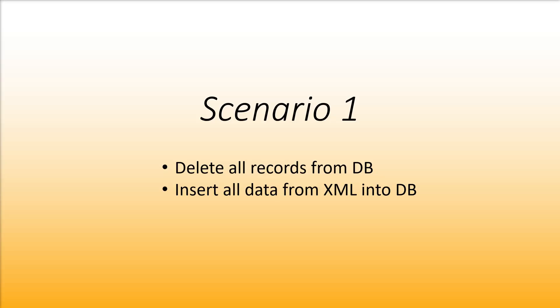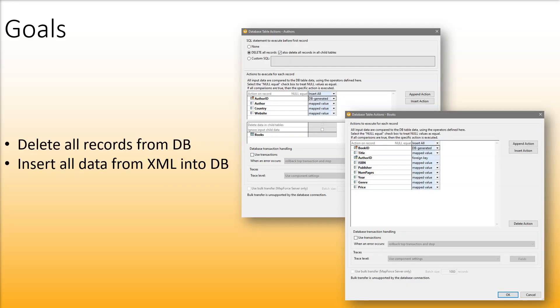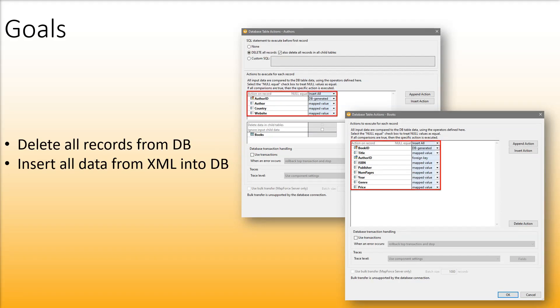In the first scenario, we want to delete all the records from our database and then populate the database with all the data from the source file. To achieve these goals, we will configure the delete statement first, then we will set the insert action on the Authors and Books tables.